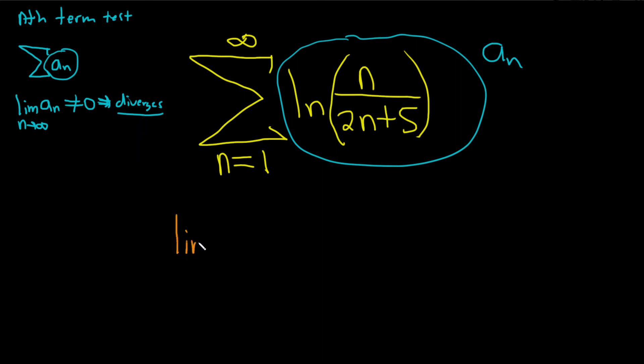So we take the limit as n approaches infinity of our a sub n, so the natural log of n over 2n plus 5.